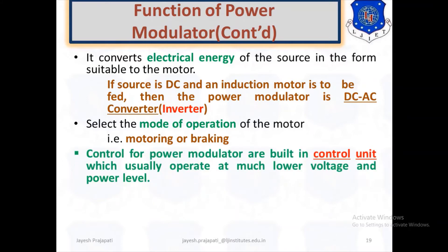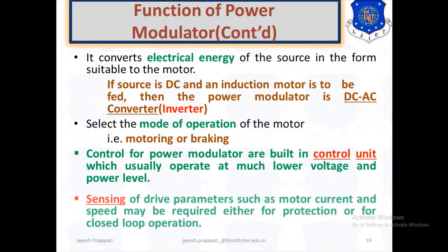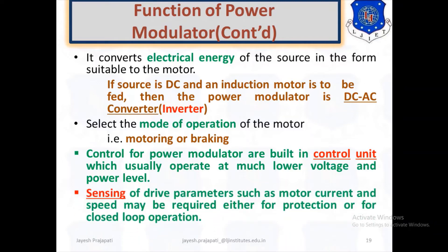Controls for the power modulator are built into the control unit, which usually operates at lower voltage and lower power levels. Sensing of drive parameters such as motor current and speed may be required either for protection or for closed-loop operation.